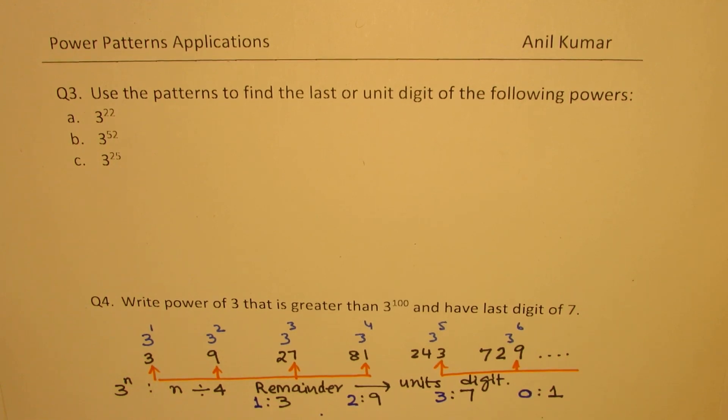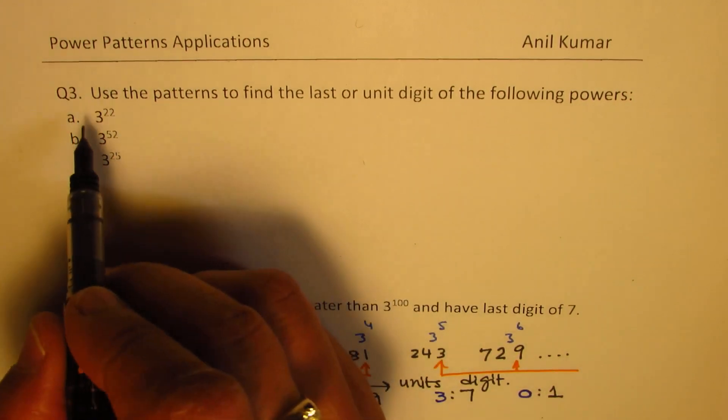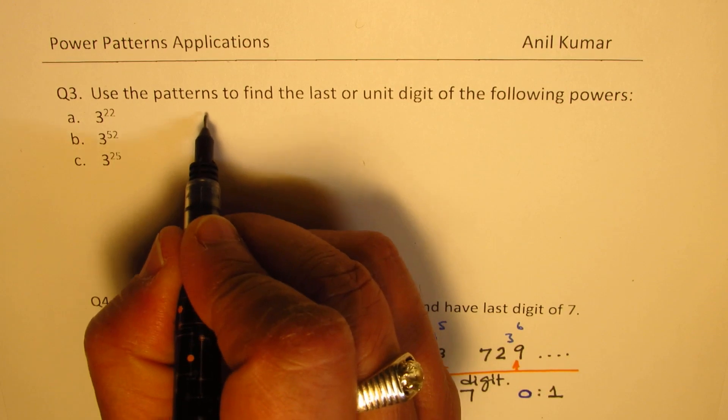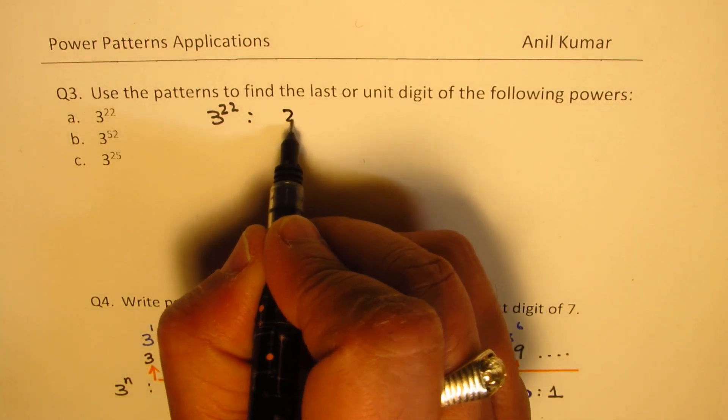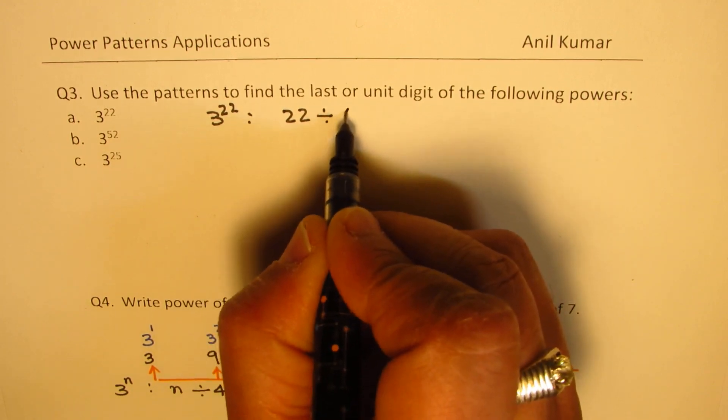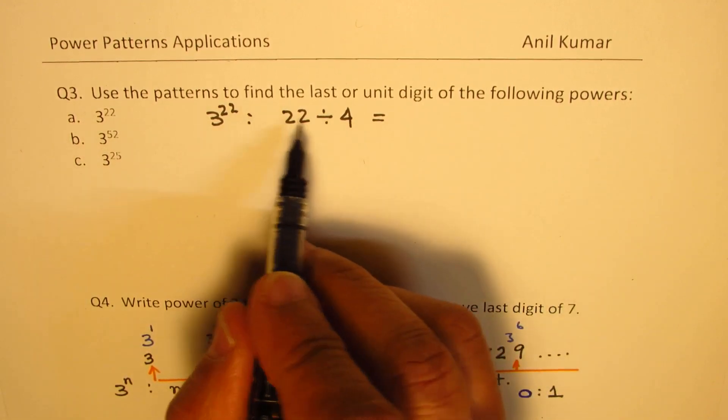OK, now, using this pattern rule, let us answer our questions. So, let's begin with 3 to the power of 22. So, 3 to the power of 22 will actually divide 22 by 4, right? So, when you divide 22 by 4, it goes 5 times with the remainder of 2.